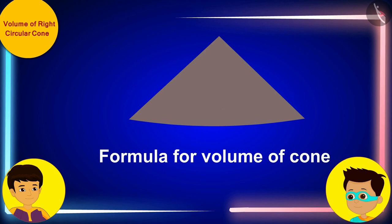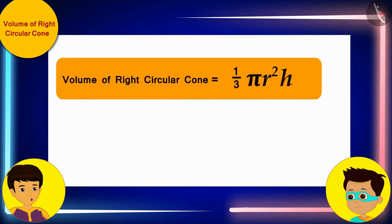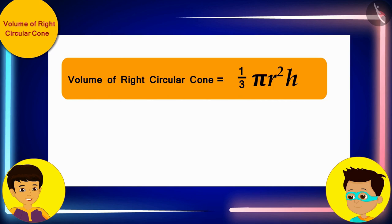I remember the formula for the volume of a cone. The volume of any right circular cone is one third the product of pi square of r and h, where r is the radius of the base of the cone and h is its height.